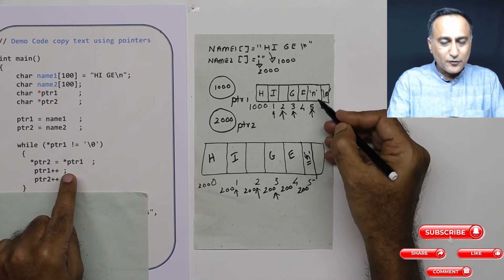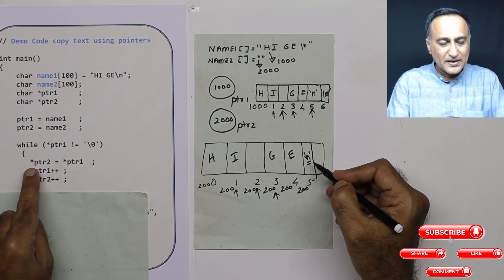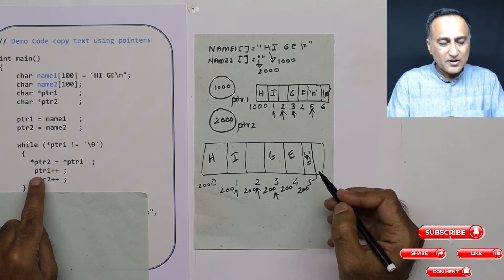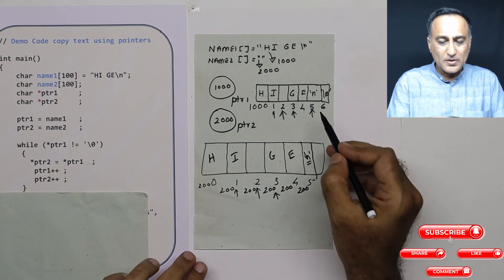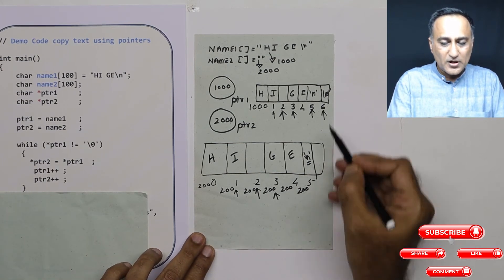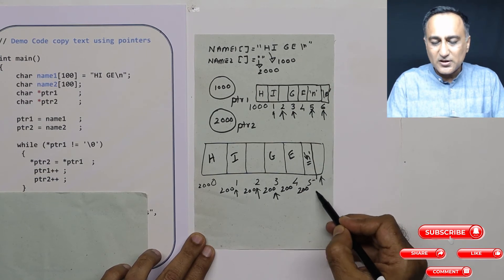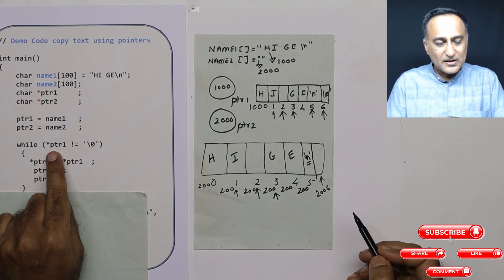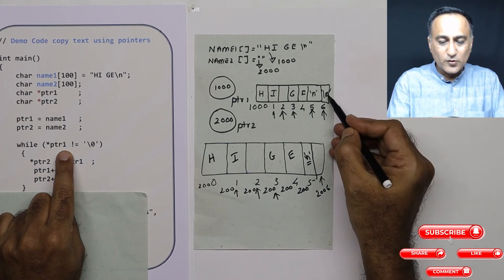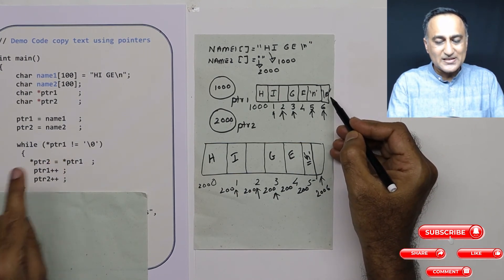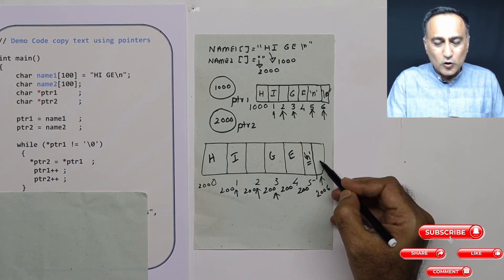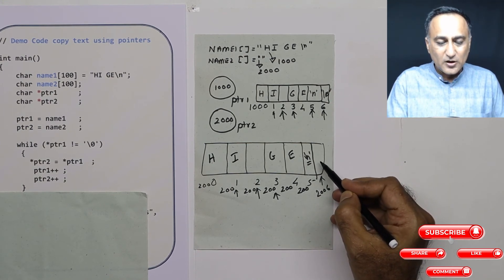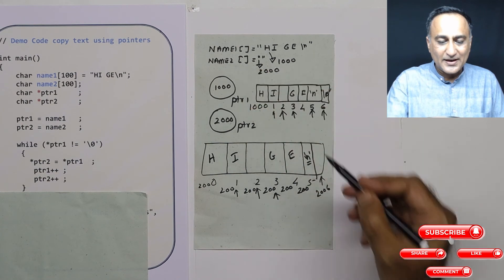So enter key from here has got copied here in this particular statement. ptr1 is being increased, ptr2 is also being increased. So ptr1 is going here, ptr2 has also come to this 2006 address. But now when I come here, star ptr1 is equal to null. So this while loop fails. But what I have done is I have not copied a null to ptr2. That means I have not put a null at the end of name2.